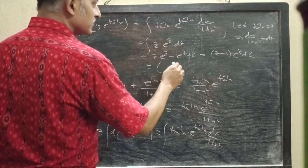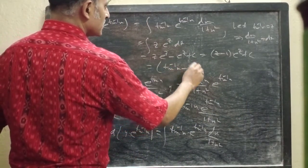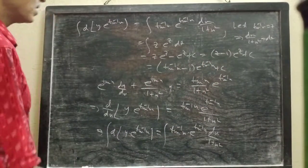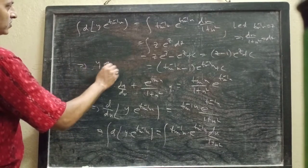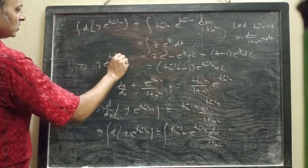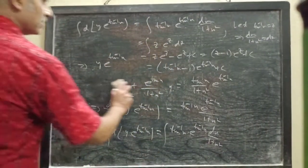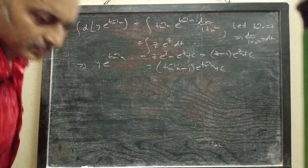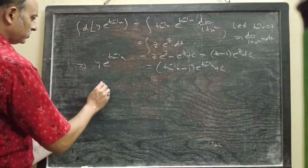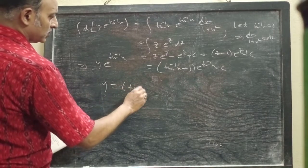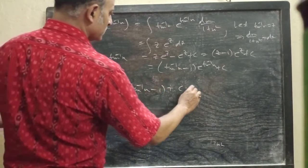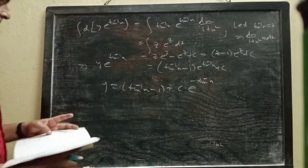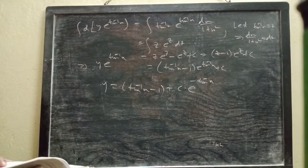So the result becomes (tan⁻¹x - 1) e^(tan⁻¹x) + c, and the left hand side is y × e^(tan⁻¹x). So finally the general solution of the differential equation is y = (tan⁻¹x - 1) + c × e^(-tan⁻¹x).